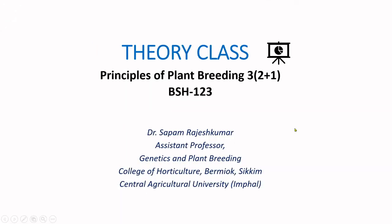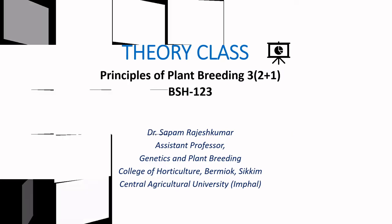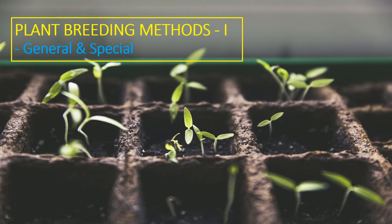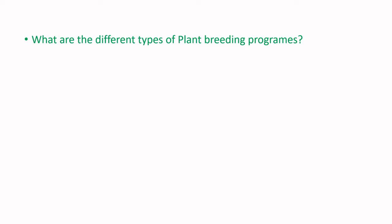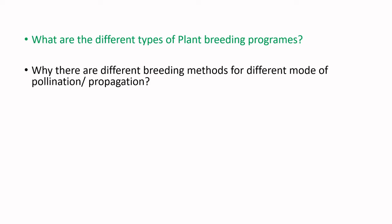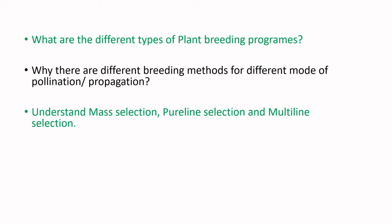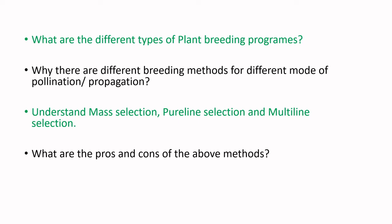Hello students, welcome to the theory class on Principles of Plant Breeding. Today's topic is plant breeding methods — the general and the special. By the end of this class you'll be able to answer: what are the different types of plant breeding programs, why there are differences between breeding methods for different modes of pollination or propagation, what is mass selection, pure line selection, and multi-line selection, and what are the pros and cons of these three breeding methods.